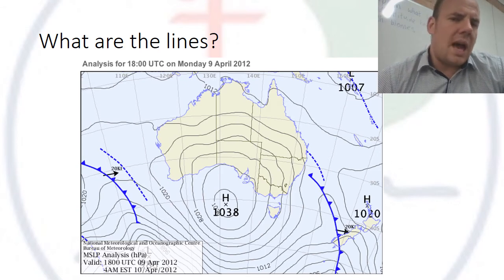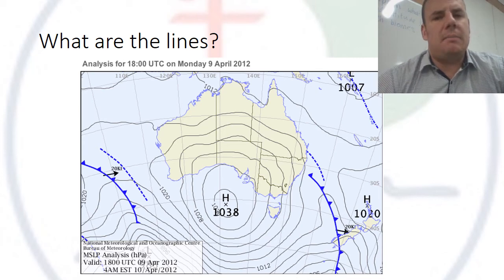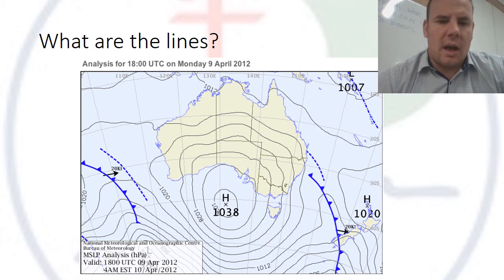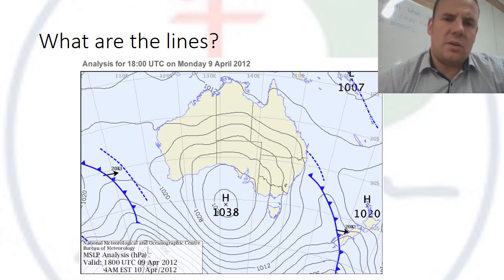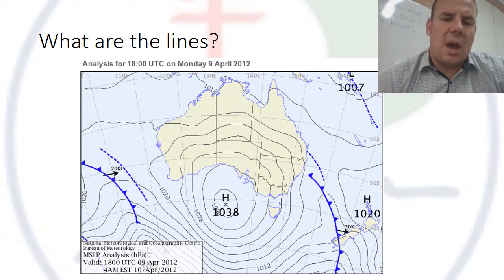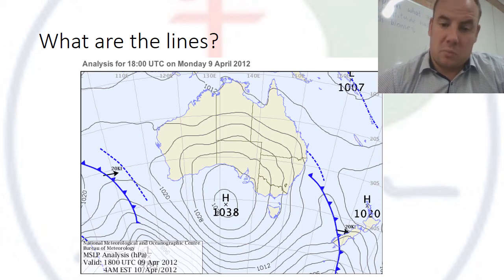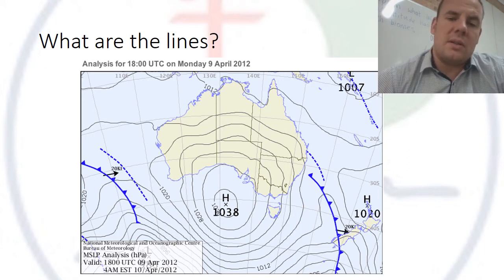Those lines are called isobars and they show similar pressure readings, which is why we join them up. We get those pressure readings from different weather stations around the country. We work out the pressure at each station, plot out similar lines of pressure, join those lines up, and then plot them onto a bigger map like the one here.